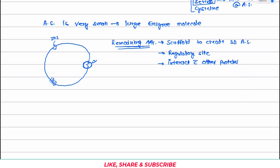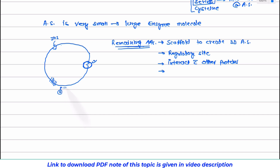Last but not least is a very interesting aspect of this remaining part. Suppose the desired substrate comes and collides at this part — this is not the active site, so reaction will not take place. But many enzymes have a unique arrangement of amino acids, so when the substrate collides over here, it guides the substrate molecules towards the active site. The substrate molecule slowly moves along the surface of the enzyme and reaches the active site.